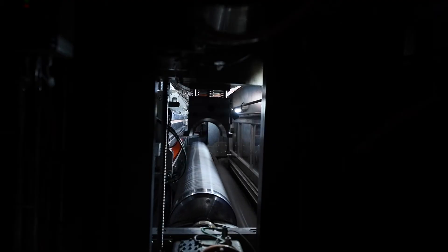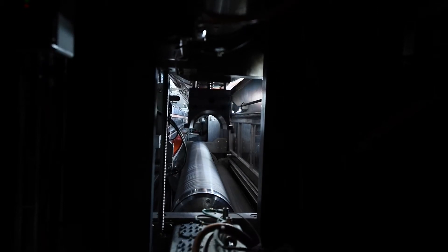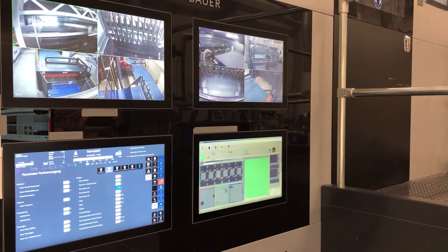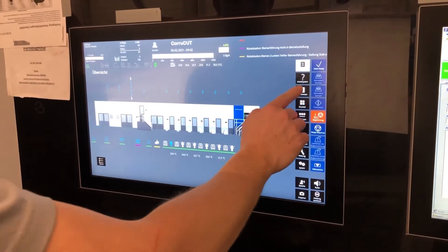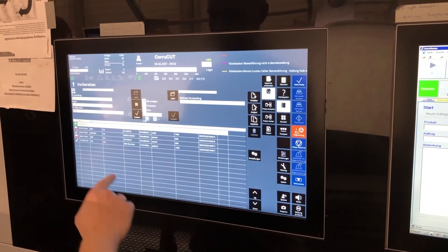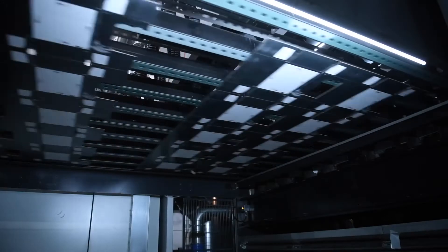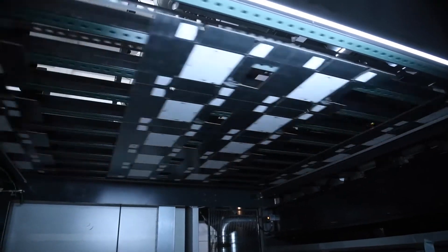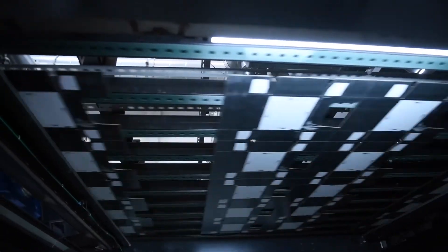Fully automatic change of anilox roll in less than two minutes. Highly automated setup processes reduce the time required for job changes to a minimum. After a one-time fully automatic test run saleable products are produced.